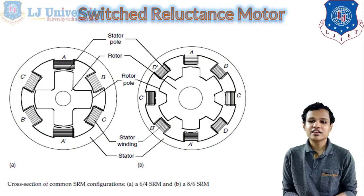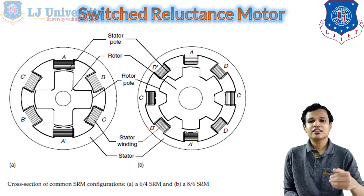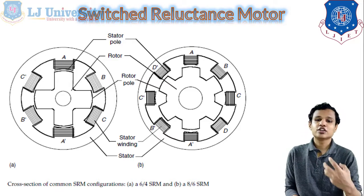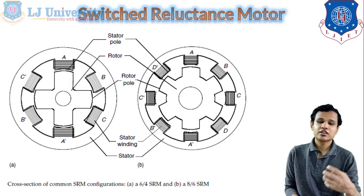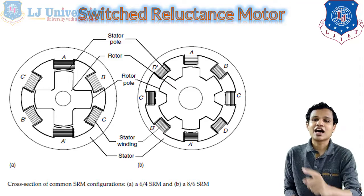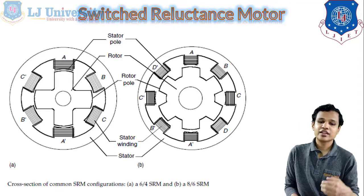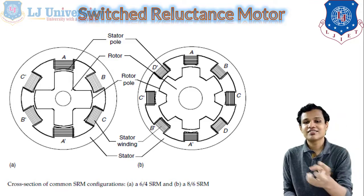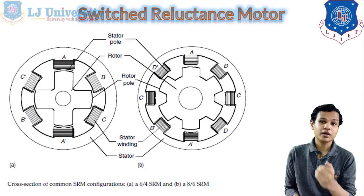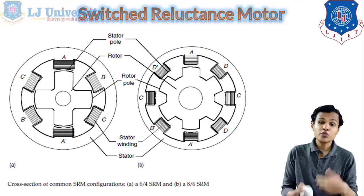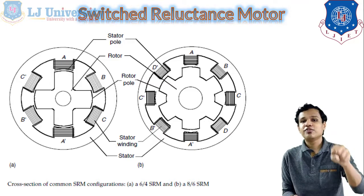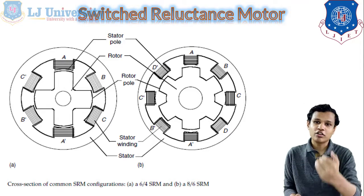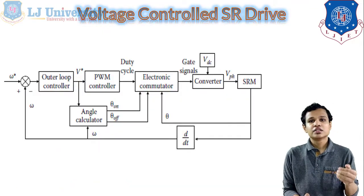This is a basic diagram of the SR motor. The SR motor is classified based on the number of windings. The rotor and stator poles are provided, and stator windings are wound on the stator poles. Common configurations include 6/4 SRM and 8/6 SRM, where slots are provided for the stator windings. All these motors need to operate as generators when charging the battery or when excess power needs to be recovered rather than wasted.